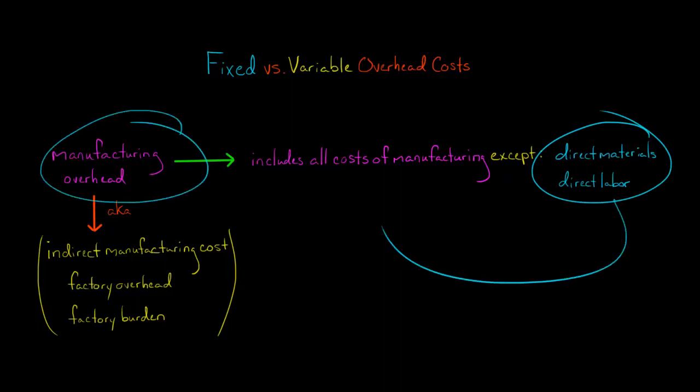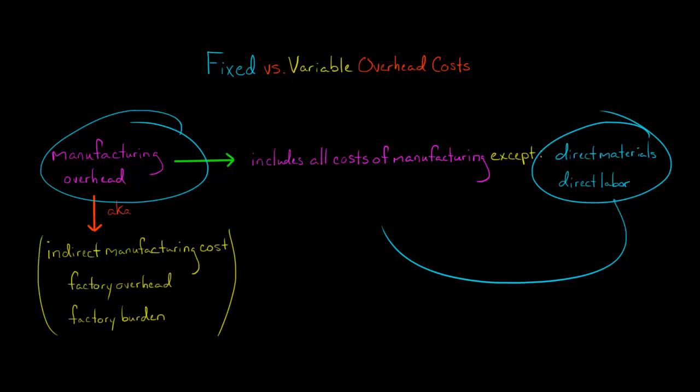Manufacturing overhead, on the other hand, is not directly traceable to the product being manufactured. That's why we sometimes call manufacturing overhead the indirect manufacturing cost. People will sometimes also refer to manufacturing overhead as factory overhead or factory burden, because manufacturing takes place in a factory.